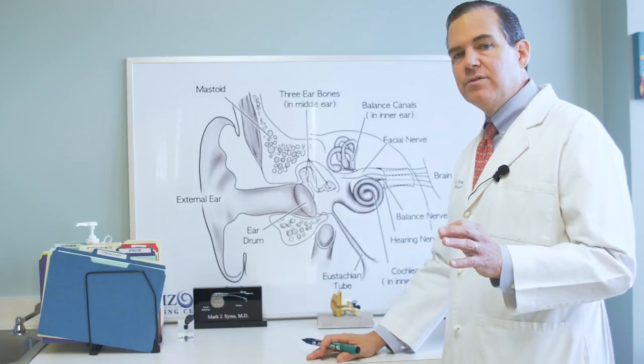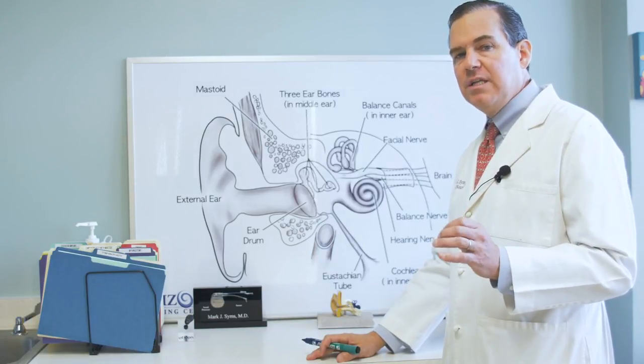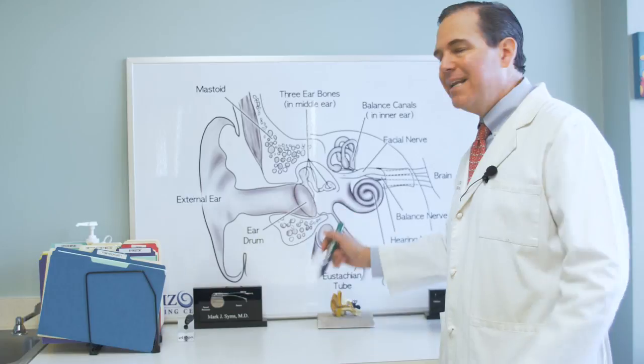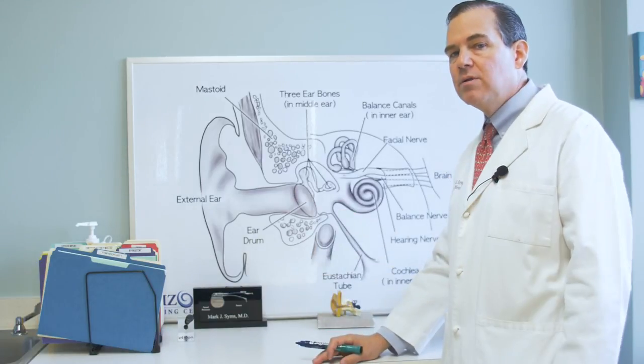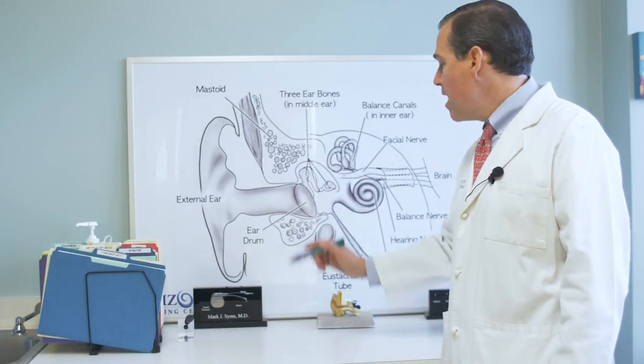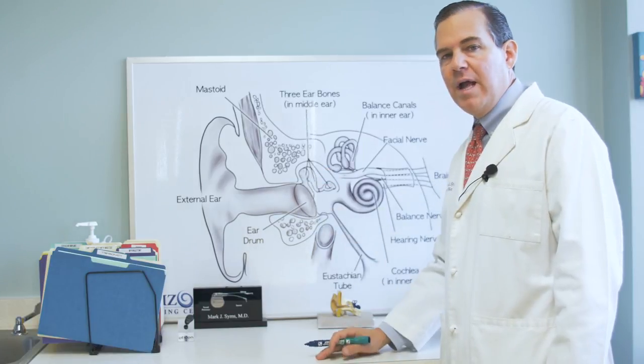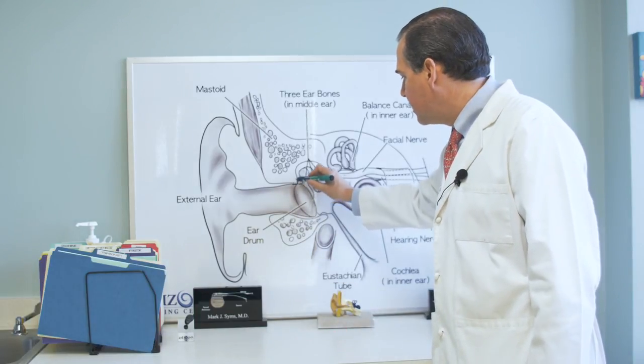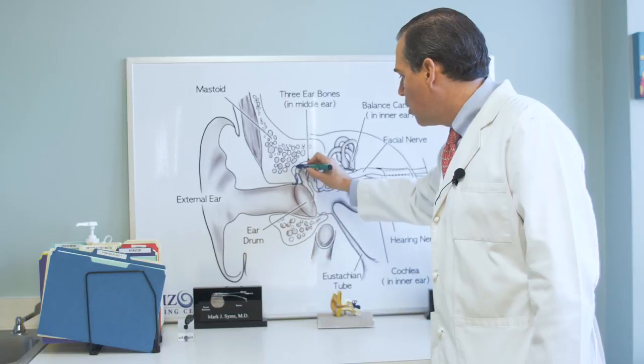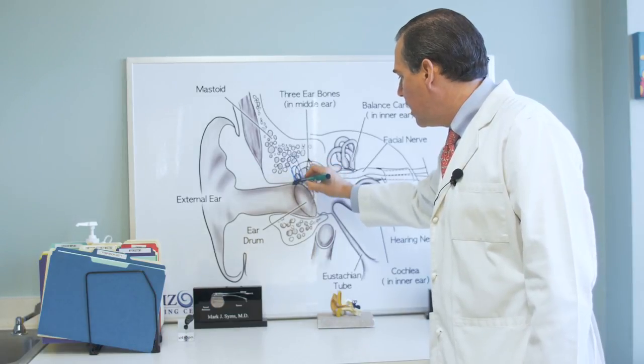The eardrum has three layers. It has the outer layer, which is skin, the inner layer, which is a lining like your mouth and your nose, and a middle layer that is a fibrous layer. That fibrous layer is missing right here in the eardrum. And what happens is the eardrum gets sucked in and it gets sucked in more and more and more.